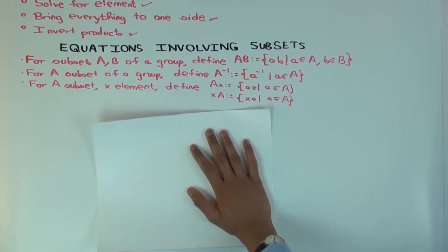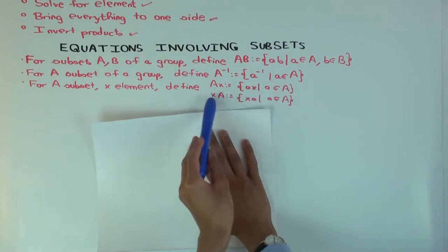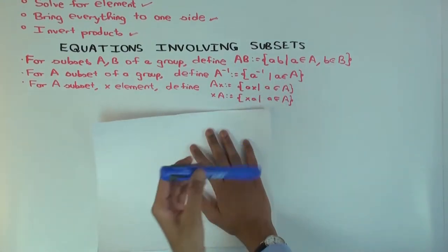You can also take a subset and an element and multiply the subset by the element. That's just taking all products A, X, where A is in the subset. And you can do the left, multiplicating the elements on the left with X, A, A is in the subset.